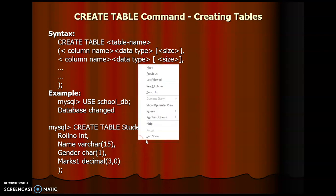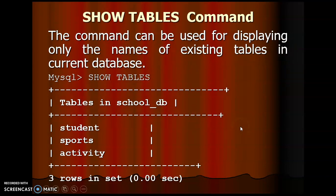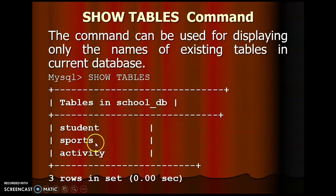The next command is SHOW TABLES. This command is used for displaying only the names of existing tables in the current database. For example, in the school_db database we can see three tables: students, sports, and activities. SHOW TABLES is used to display the tables in the existing database.